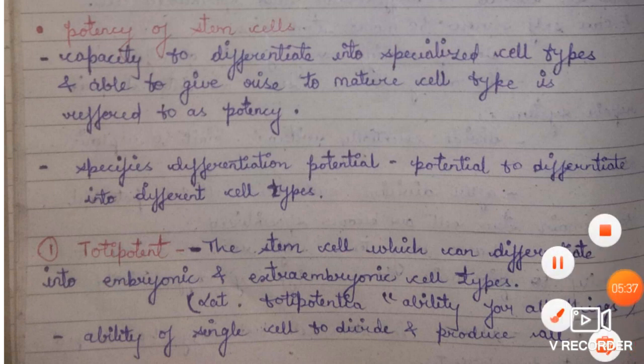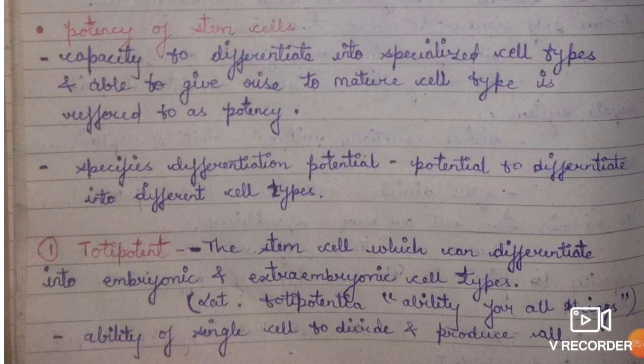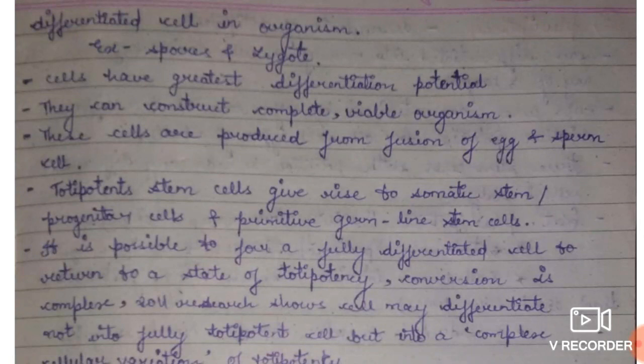Totipotency is derived from the Latin word 'totipotentia,' meaning ability for all things. These are stem cells which can give rise to all embryonic and non-embryonic cell types — meaning cells of all three layers and all placental cells. They divide, differentiate, and give rise to cells of the entire organism, having the ability to give rise to a whole organism.